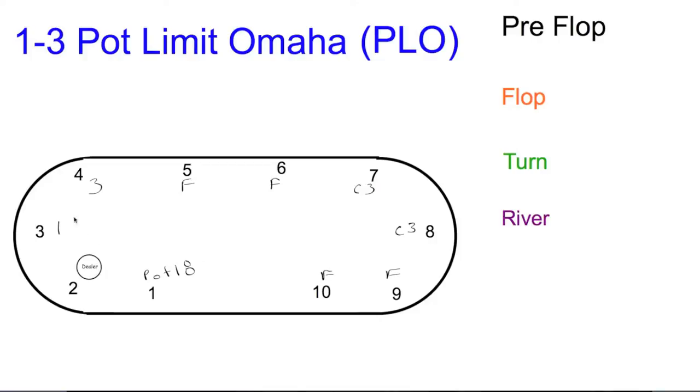Bringing the action to seat 3, the small blind for 1—they fold. Seat 4 folds. We have a call of 18 and another call of 18.